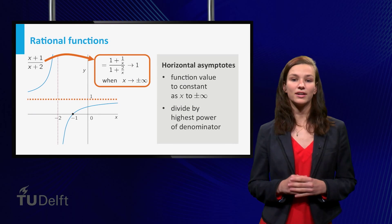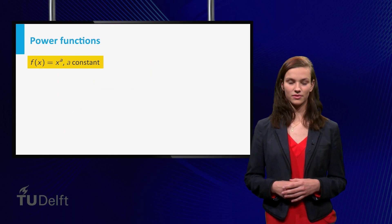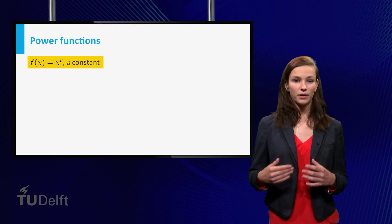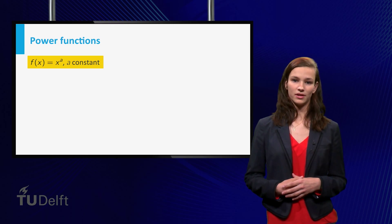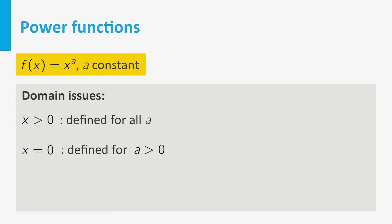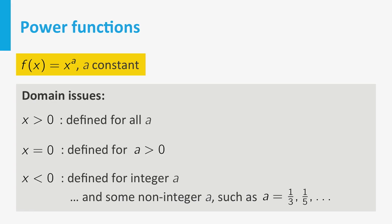The final class of functions that we considered are the functions of the form x to the power a, the so-called power functions. The domain depends on a. All power functions are defined for x bigger than 0. However, if x equals 0, x to the power a is only defined for positive a. For negative x it is more complicated. There is no problem if a is an integer. For non-integer a it is usually not defined, but there are exceptions, like x to the power one third.